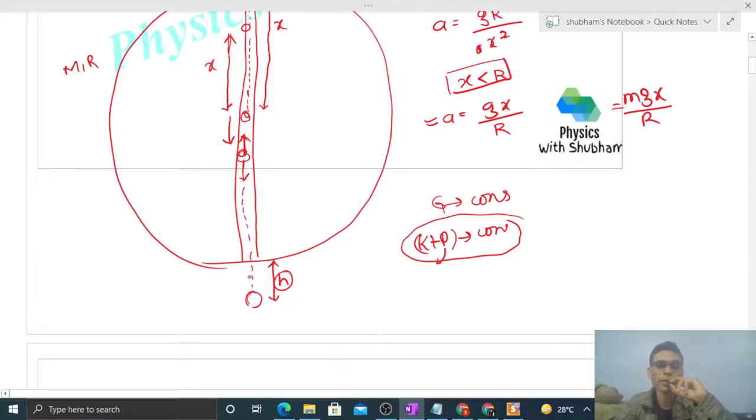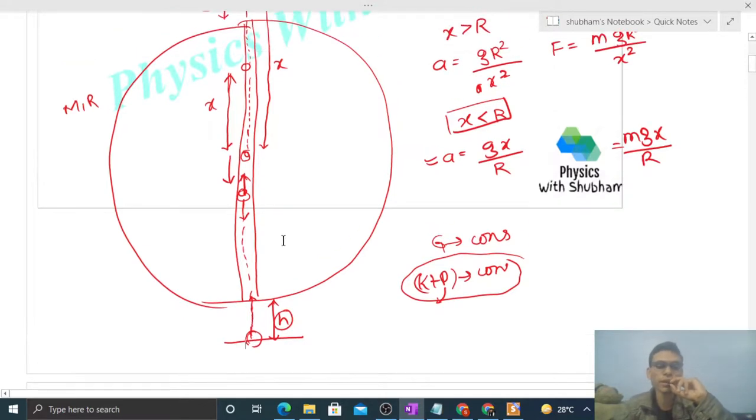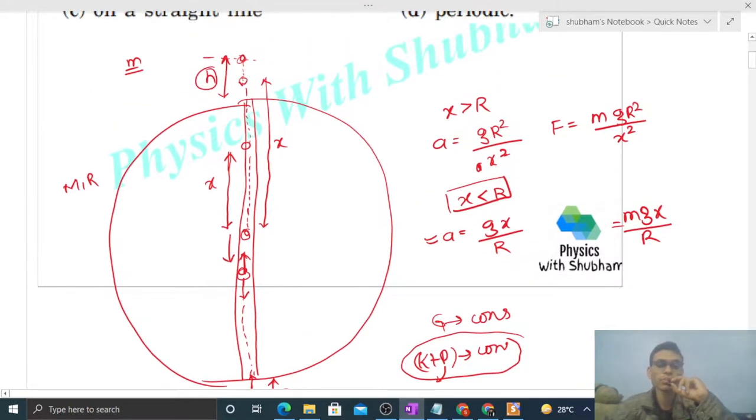Once it reaches there, the symmetric condition applies again. The particle will move toward the Earth's surface, toward the center of Earth. Symmetric motion will occur—it goes to the center again, then upward, upward, and reaches height h on the upper side.